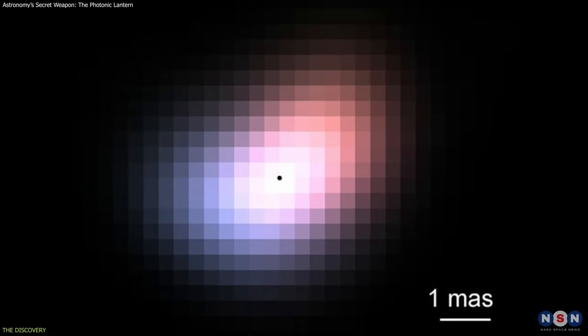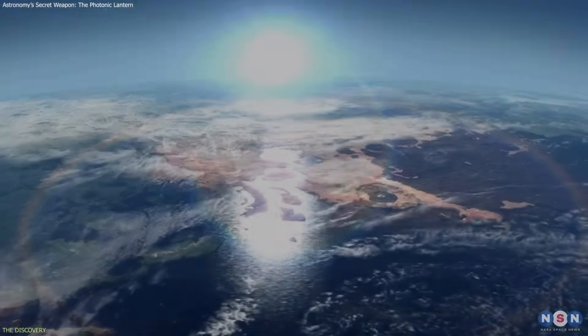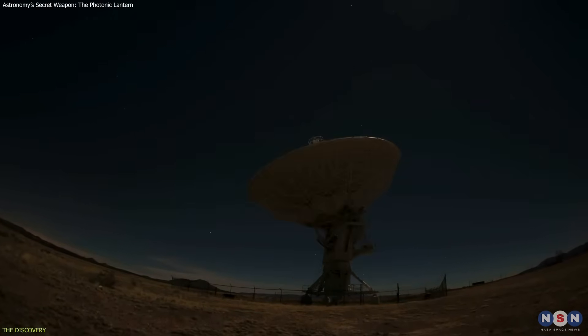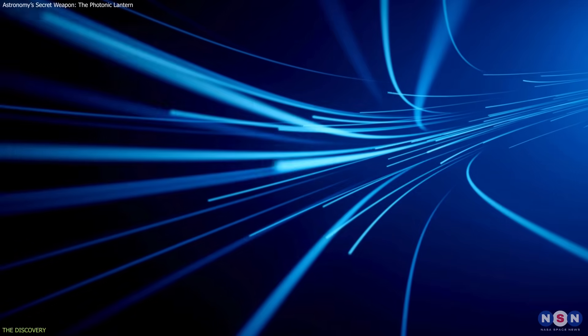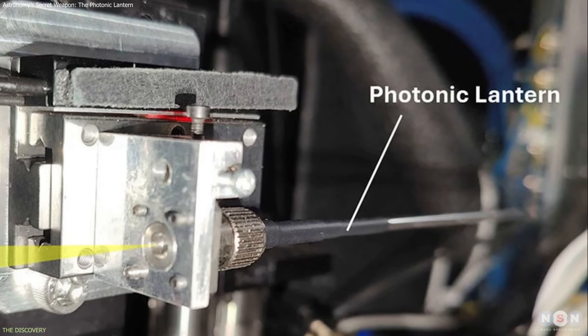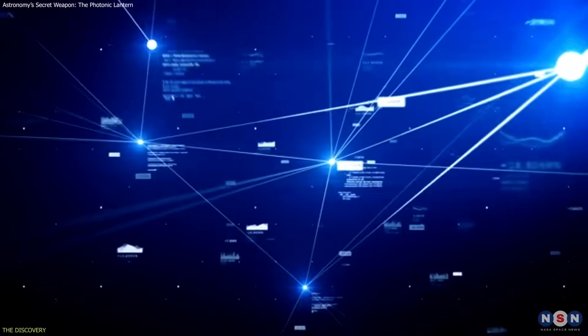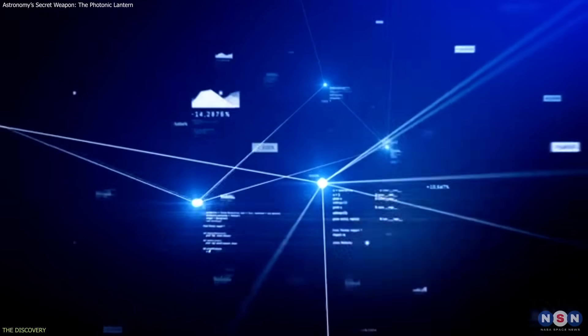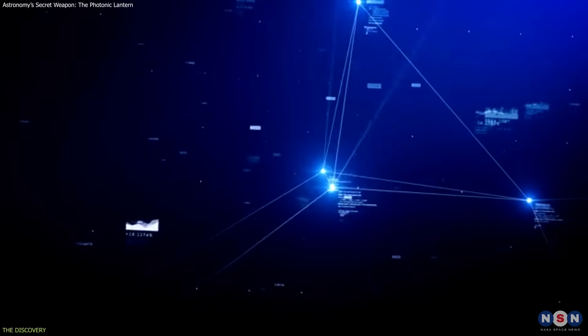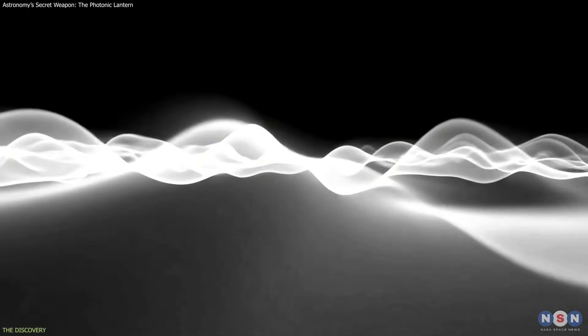Achieving this clarity required overcoming a familiar problem: Earth's atmosphere. Even with adaptive optics compensating for turbulence, tiny fluctuations blur the incoming light. The photonic lantern is so sensitive that these residual distortions became critical. To address this, the team developed advanced data processing methods to filter out noise without sacrificing the subtle signals that make the technique so powerful.